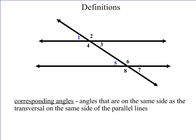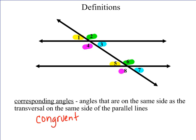First, we're going to have what we call corresponding angles. Corresponding angles are angles that are congruent to each other — congruent means equal. Angle one corresponds to angle five because they're on the same side of the transversal and on the same side of the parallel lines, both above the parallel lines. The same is true for angles two and six, angles seven and three, and angles four and eight. So we have four sets of corresponding angles, and all of these angles are congruent.